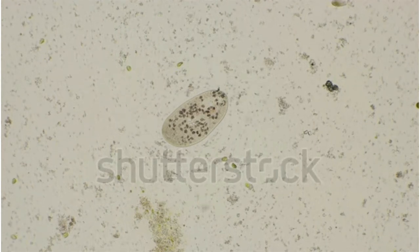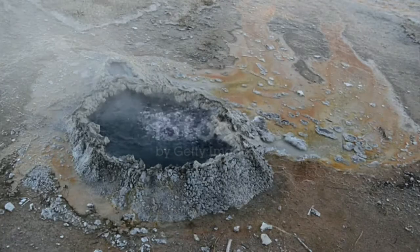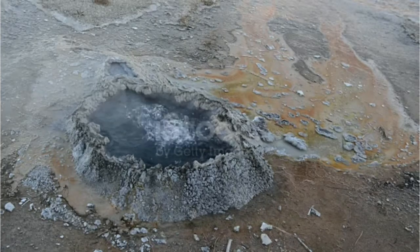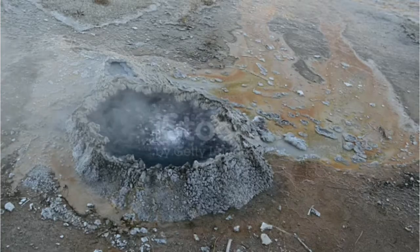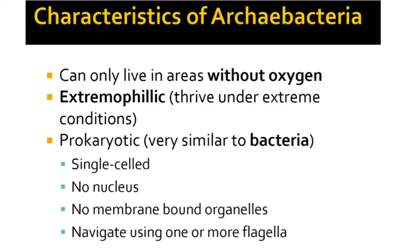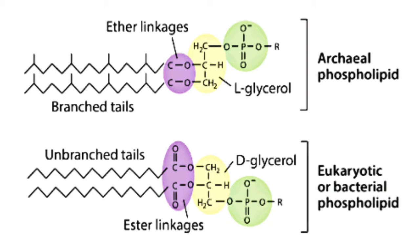Lysis occurs, meaning the membrane is ruptured. These Archaebacteria can live in high temperatures and low pH — more than 100 degrees Celsius or 212 degrees Fahrenheit. They are very different from other bacteria. They are microscopic, unicellular, non-cellulosic, simple, and primitive. Reproduction is asexual and may occur by binary fission, fragmentation, or budding. The plasma membrane is made up of a single layer of branched-chain lipids.